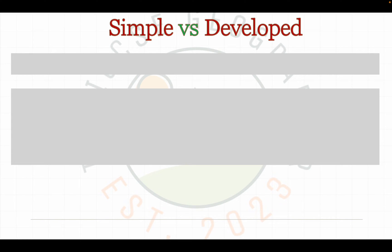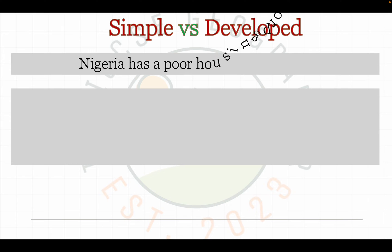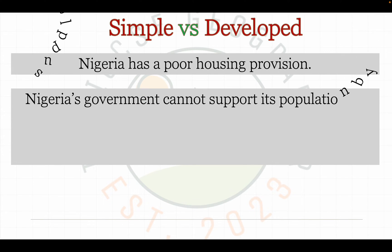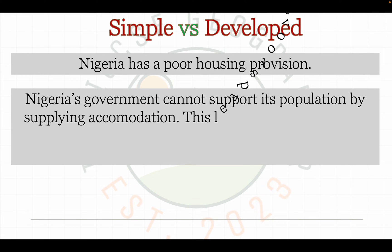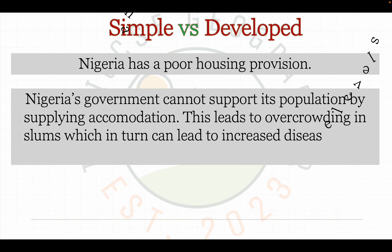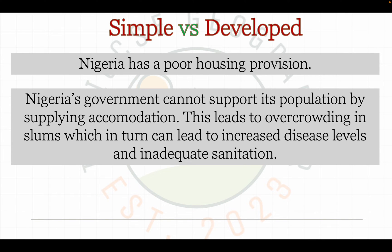Before we do, we must be able to differentiate between what is a simple statement and what is developed. An example of a simple statement would be: 'Nigeria has a poor housing provision.' However, to develop this, you could describe in what ways the housing provision is poor, or what the additional effects of this poor provision are. For example: 'Nigeria's government cannot support its population by supplying accommodation. This leads to overcrowding in slums, which in turn can lead to increased disease levels and inadequate sanitation.'